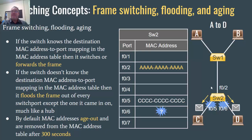Switch2 needs to forward this frame, which is intended for host D (all Ds in the destination MAC). However, Switch2 does not have an entry for host D in its MAC address table — you can see on port 6 there's no MAC address. There is a MAC address for C on port 5, but none for D. So when the switch doesn't know the destination MAC address-to-port mapping, it floods the frame out of every switch port except the one it came in on. It sends it out of port 5 and port 6, but not back the way it came.